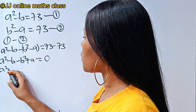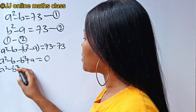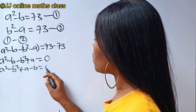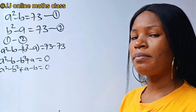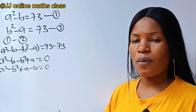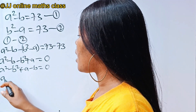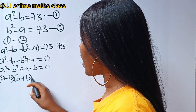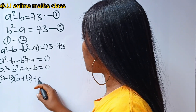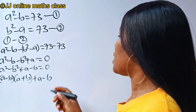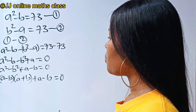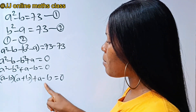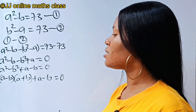We can bring out a squared minus b squared from here, then plus a minus b is equal to 0. Now, a squared minus b squared is a minus b multiplied by a plus b. And we still have plus a minus b equal to 0.